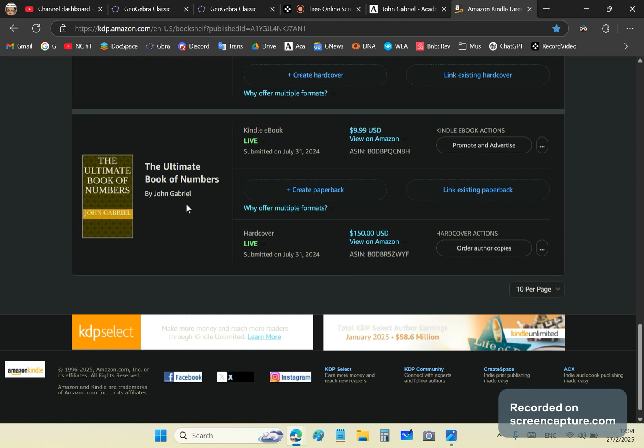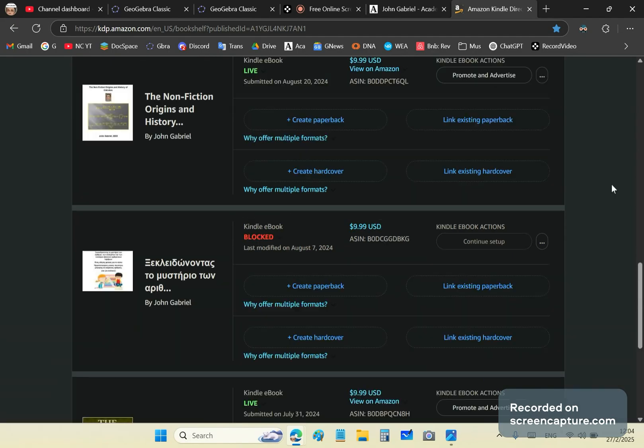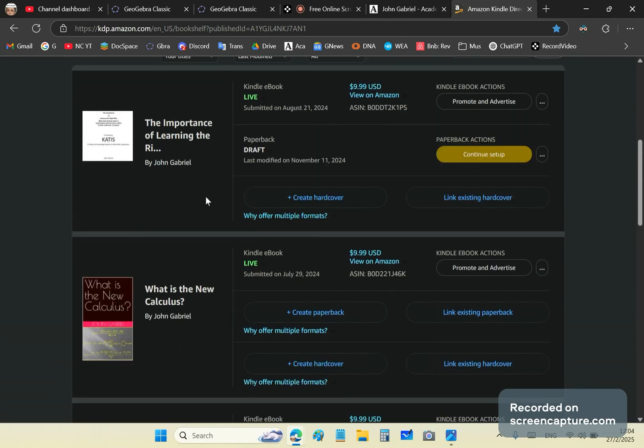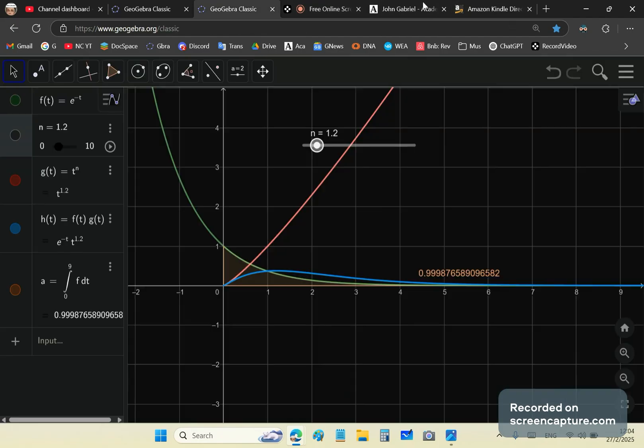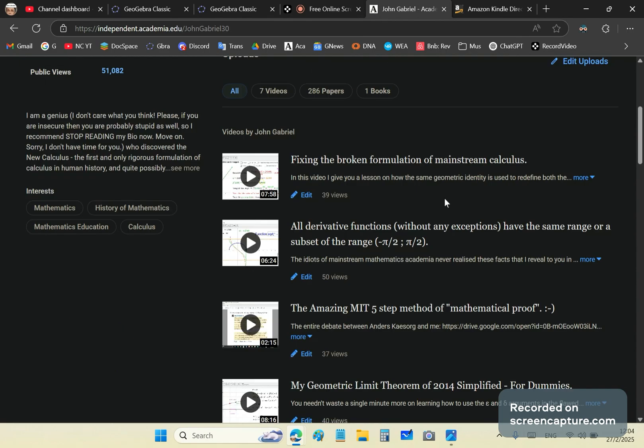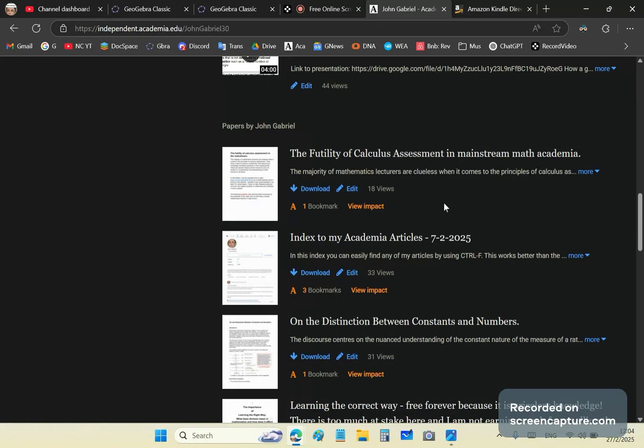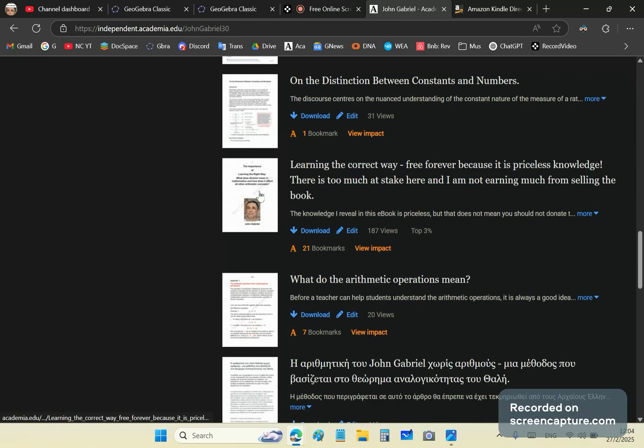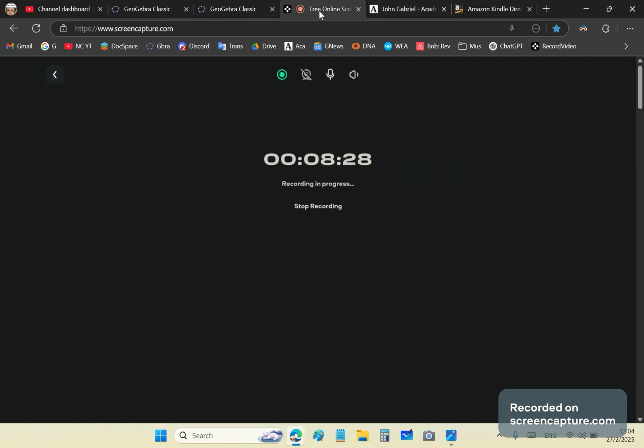And The Ultimate Book of Numbers tells you everything you need to know about numbers. You can also, this one is not free, you can only get it here on Amazon. But this copy here, there is an e-book version, which you can download with a watermark. This is already in the top 3%. All right, that's it. I'm John Gabriel. This is New Calculus Channel. Until next time, goodbye.